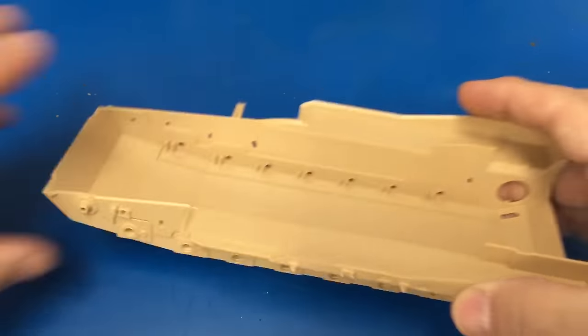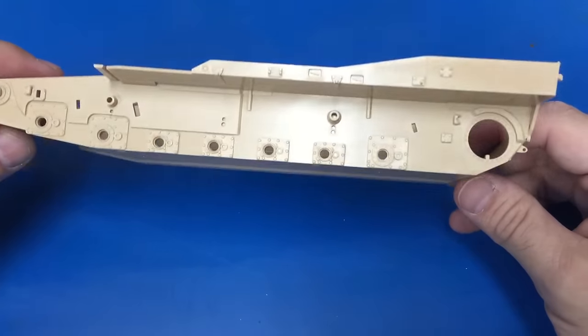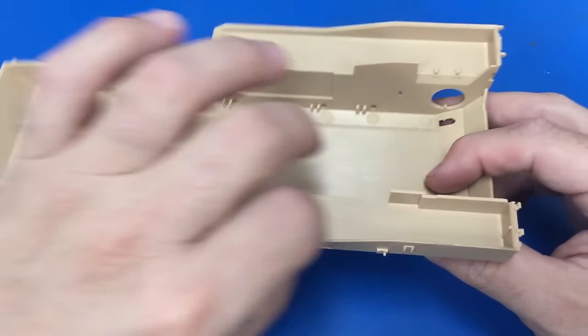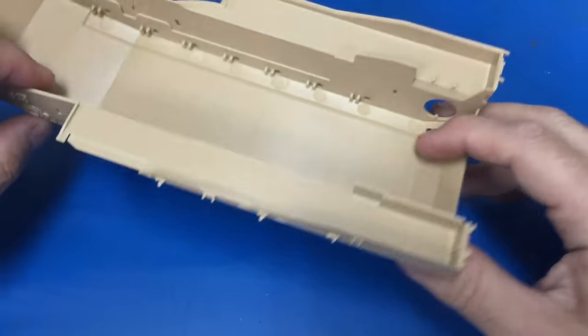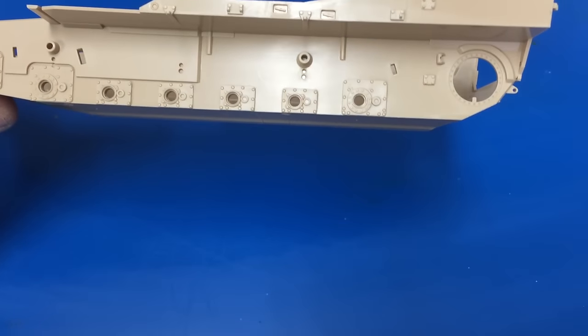Next thing we're going to look at is the chassis itself. It's a bathtub-style chassis. It has the sponsons already molded right into it, so that's a nice feature. It keeps it nice and square. Nice, super detail on the sides of that.